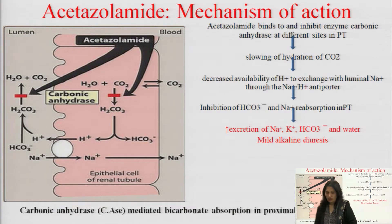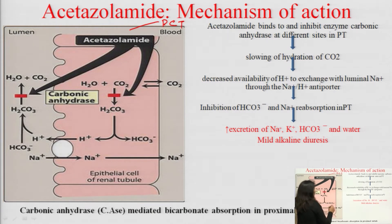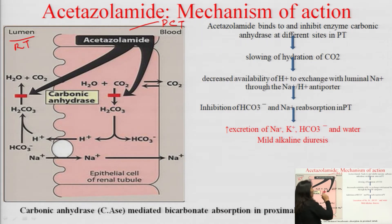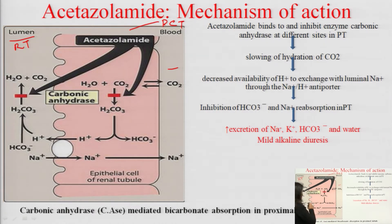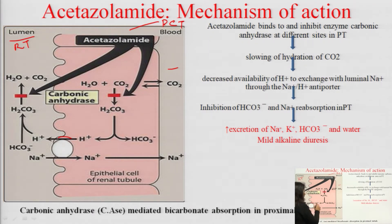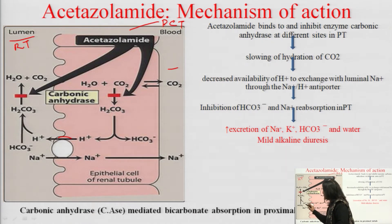This is a diagram of the epithelial cell of the proximal convoluted tubule. The lumen of the renal tubule is on one side, and the interstitial fluid where blood capillaries are present is on the other side. On the luminal side, there is the sodium-hydrogen antiporter exchanger, through which hydrogen ions are secreted from the cell into the lumen.